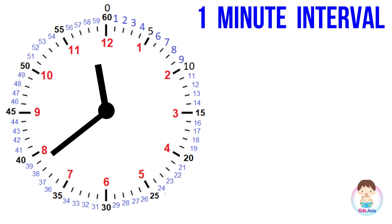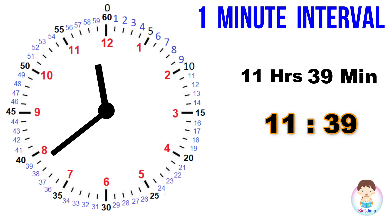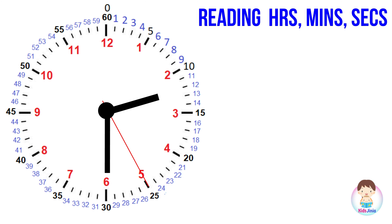Let's see another example. The minute hand is pointing between 7 and 8. We already know 7 represents the 35th mark, so after 35 it is 36, 37, 38, 39 — the minute hand points at the 39th mark, so it is 39 minutes. The hour hand points between 11 and 12, so the time is 11 hours 39 minutes, written as 11:39.